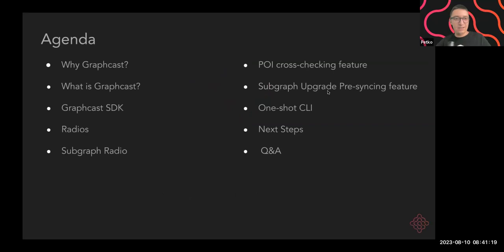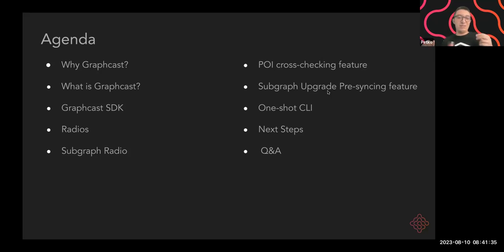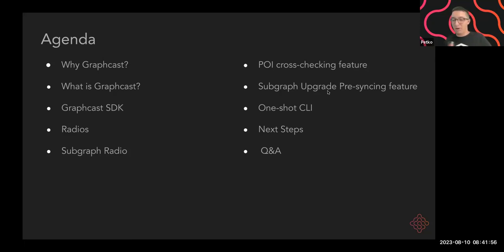We'll also talk about the subgraph upgrade pre-syncing feature — also referred to as plus-one upgrades or subgraph versioning upgrades — and then a one-shot CLI and next steps for Graphcast. At the heart of any network lies coordination: participants need to send signals to one another. When the blockchain intermediates these signals, sending a signal requires a transaction on the blockchain. These transactions cost gas, making some types of signaling or coordination between participants too expensive. Graphcast solves this problem by acting as an optional decentralized peer-to-peer communication layer of the Graph stack that allows indexers — and others — across the network to exchange information in real time, at near-zero cost.